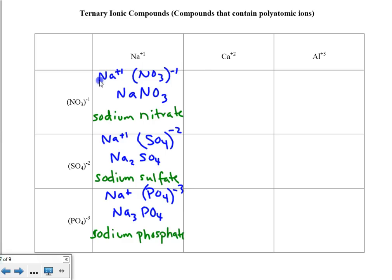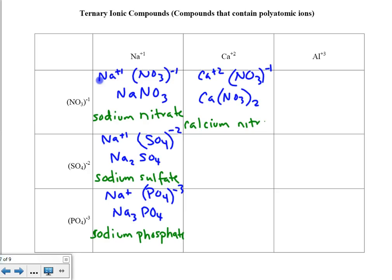Ca⁺² and NO₃⁻¹. Crisscrossing. Here is where we need to show that we need more than one nitrate, because calcium is a plus 2 and nitrate is a minus 1. So we get the formula Ca(NO₃)₂. That indicates we're going to need two of those nitrates. The name of this substance is calcium nitrate.